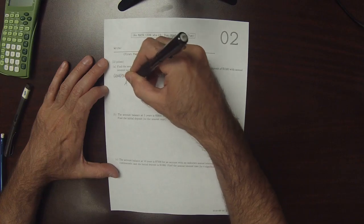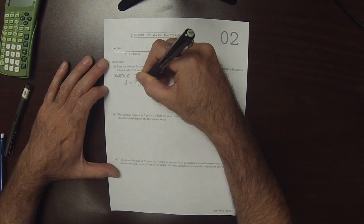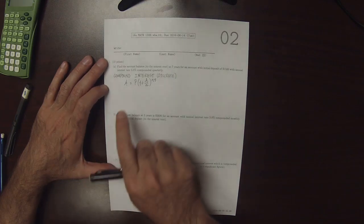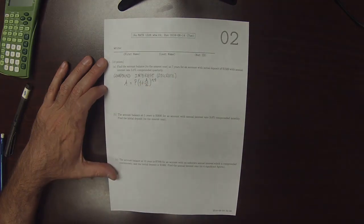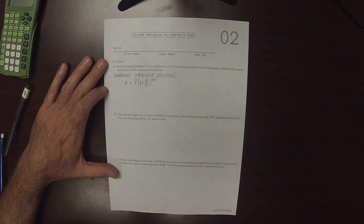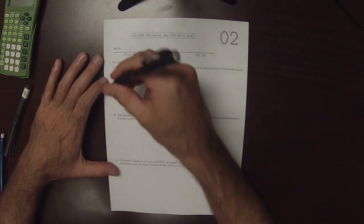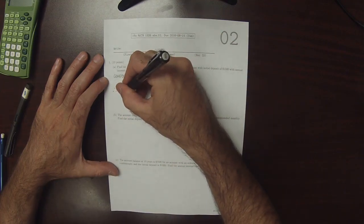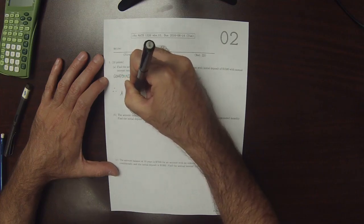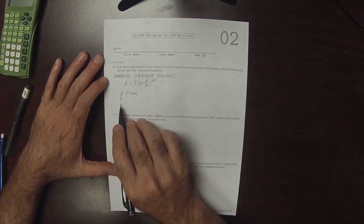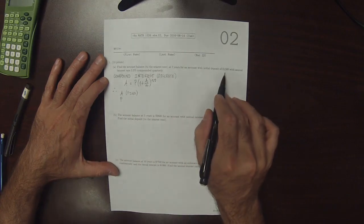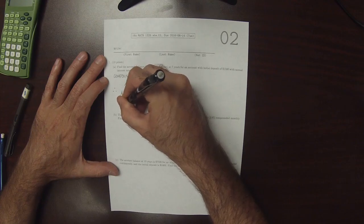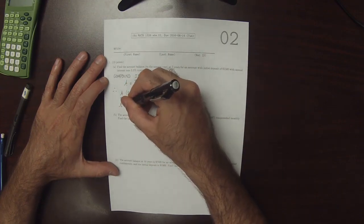Which means that the model is A equals P multiplied by 1 plus r over n to the power nt. This is the discrete compound interest formula. There are 1, 2, 3, 4, 5 different symbols in the model. On exercises such as this, you're always given all but 1, so we probably have 4 of them. A, it says find the account balance, so this is what we're supposed to find. P is the next value in the relationship, so $1,500 is the initial deposit. R, the interest rate is 5.3% written as a decimal, that's 0.053.